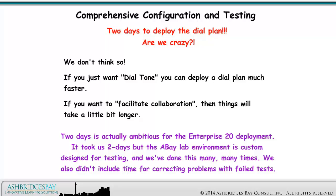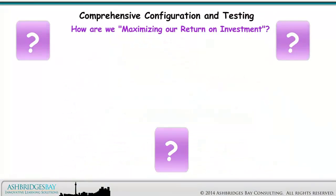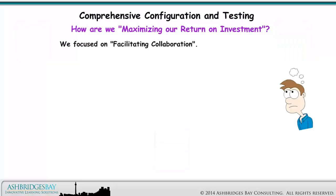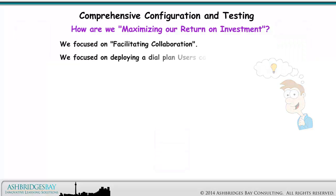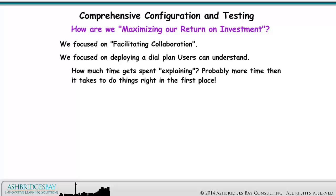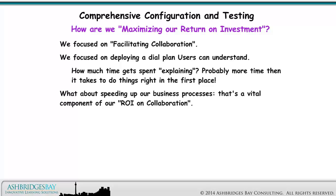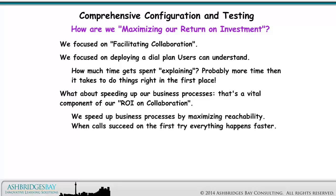We also didn't include time for correcting problems with failed tests. We focused on facilitating collaboration. We focused on deploying a Dial Plan that users can understand. How much time gets spent explaining? Probably more time than it takes to do things right in the first place. What about speeding up our business processes? That's a vital component of our ROI on collaboration. We speed up business processes by maximizing reachability. When calls succeed on the first try, everything happens faster.